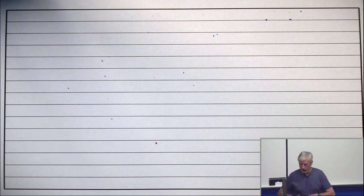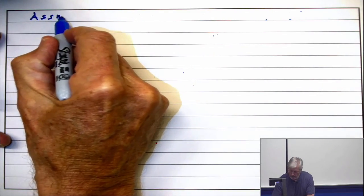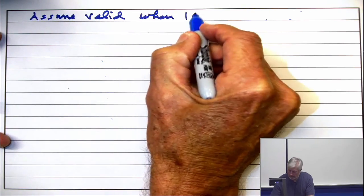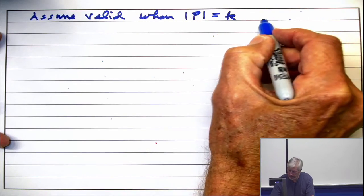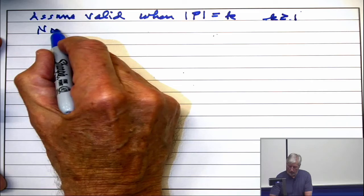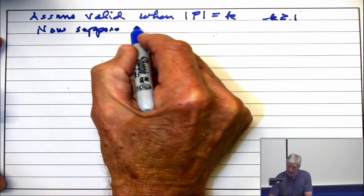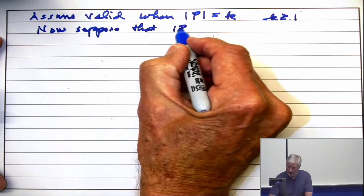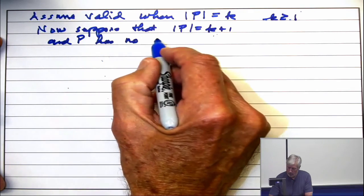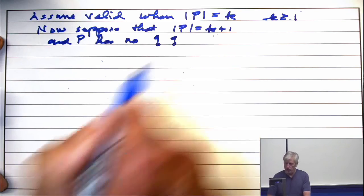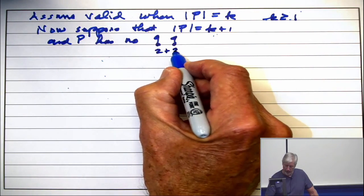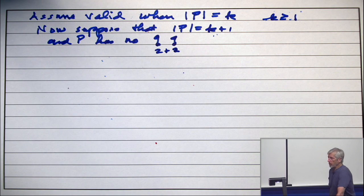Now, let's proceed by induction. So, we're going to assume valid when the size of the poset is K for some K, which is greater than or equal to 1. And then we're going to do the inductive step. So, now we're going to suppose that the cardinality of P is K+1, and P has no 2+2. So, there's no 2+2 inside P. We're going to show that P is an interval order.